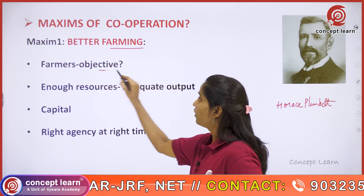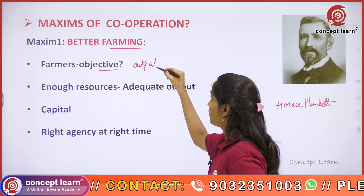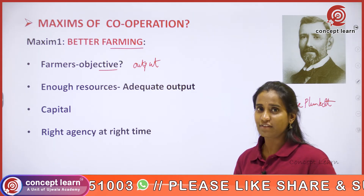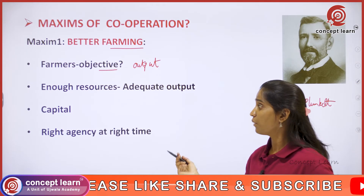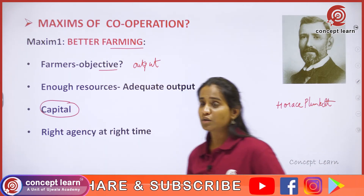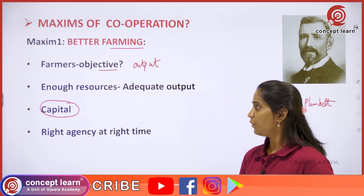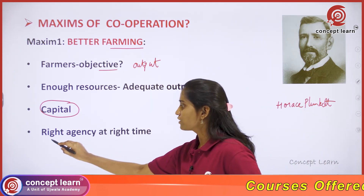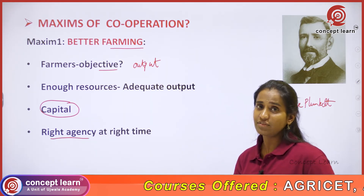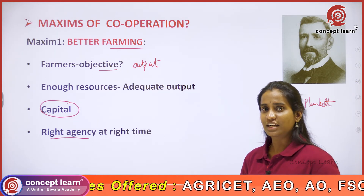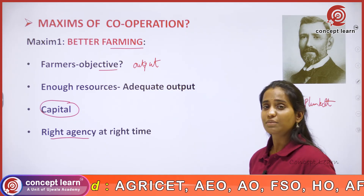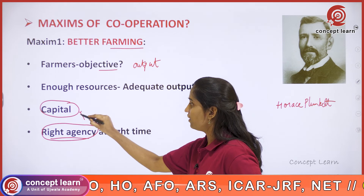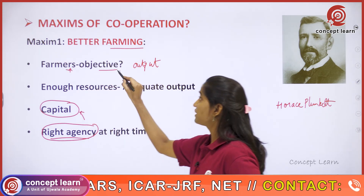What are the farmer's objectives? Output maximization is the farmer's objective. He can produce the highest output when he has enough resources. But if he is not provided with a sufficient amount of capital, he cannot produce the output he expects. When there is an organization that can provide credit at the right time — if the cooperatives can provide the needed credit at the right time — the farmer can achieve his objective. Cooperatives are the agencies that can provide capital to farmers to achieve their objective.